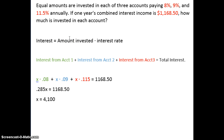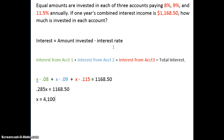For this problem we are investing in three different accounts at three different interest rates, but we're putting the same amount of money in each account and we have a given combined interest. How much interest does any given account earn? That's just the amount you invest in it multiplied by the interest rate. So we're going to add the interest from account one, plus account two, plus account three, and that equals our total interest earned.